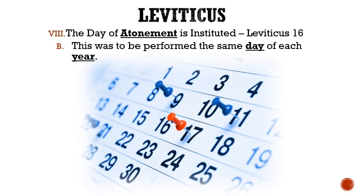Letter B: This ritual was to be performed on the same day of each year, considered a special Sabbath. According to Leviticus 23, we find out that this will be on the tenth day of the seventh month of the Jewish calendar.